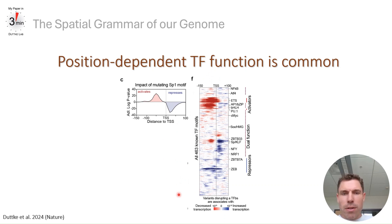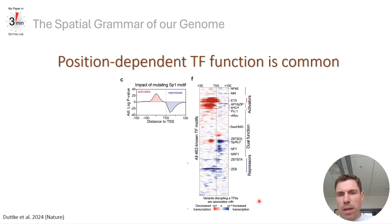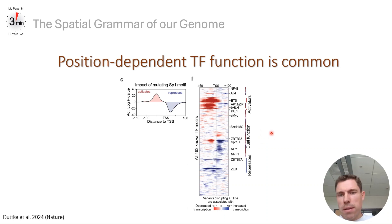Showing this across all 363 transcription factors reveals that they can be grouped into three broad categories: repressors, such as ZNF or CTCF/BCMA; activators, which were mostly the E-box factors; and — most notably — that the majority of transcription factors, including AP1 factors, bZIPs, GC-box factors, NFY, NF1, YY1, and many others, had dual function, meaning their function was position-dependent.